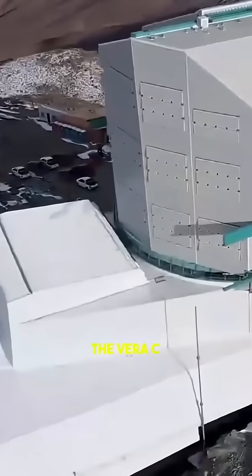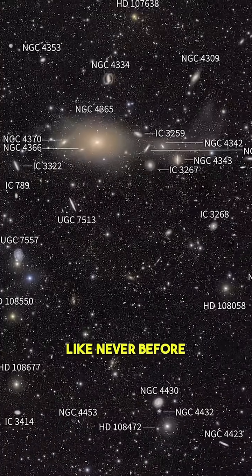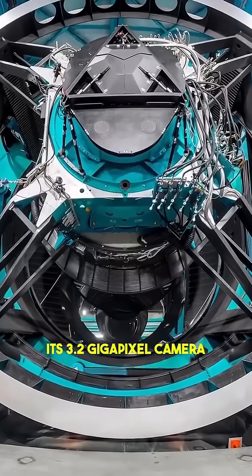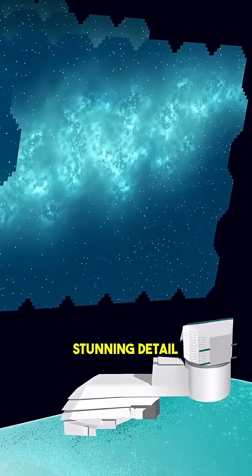Located in Chile, the Vera C. Rubin Observatory is designed to map the universe like never before. Its 3.2 gigapixel camera, the largest ever built, captures huge sections of the sky in stunning detail, making it a game-changer for astronomers.